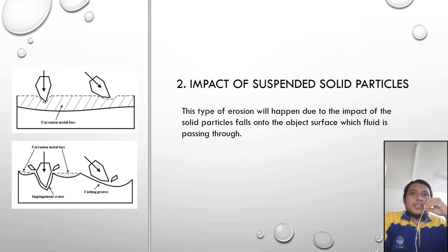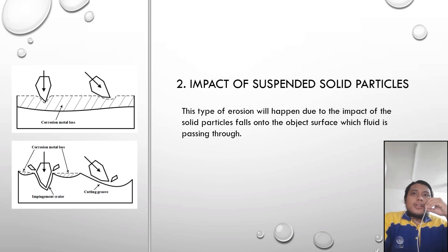Impact of suspended solid particles: this type of erosion happens due to the impact of solid particles falling onto the object surface as fluid passes through. The principle is the same as turbulent flow — the fluid creates a corrosion layer, then the solid particles erode the metal and cause damage based on how the particles hit the metal surface.